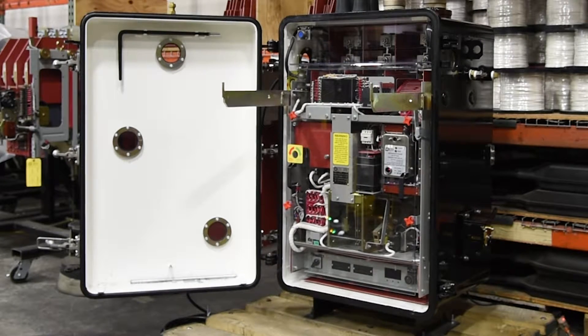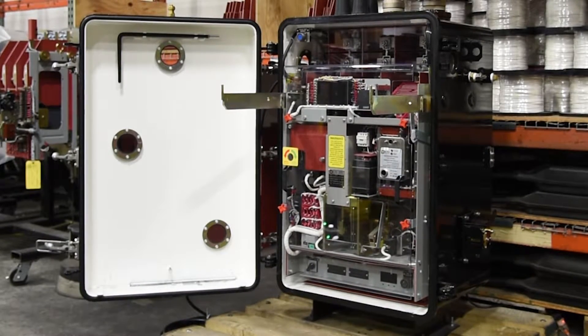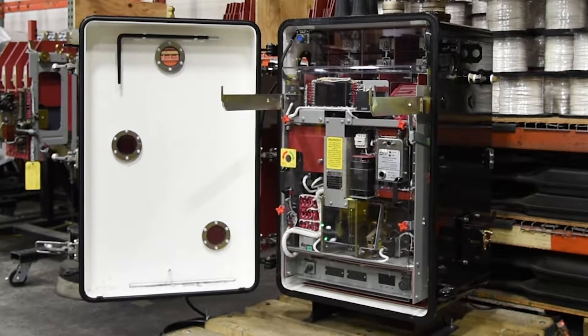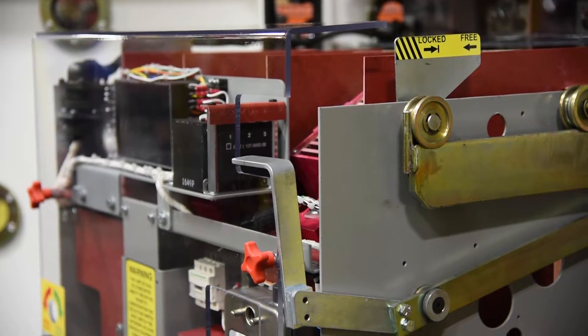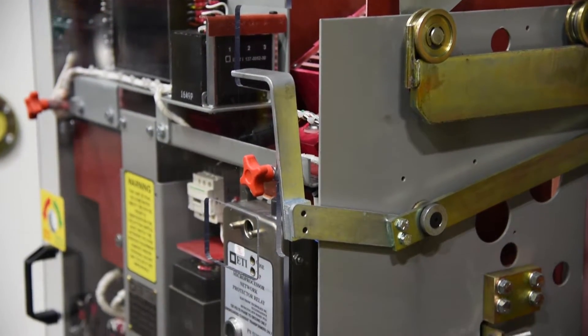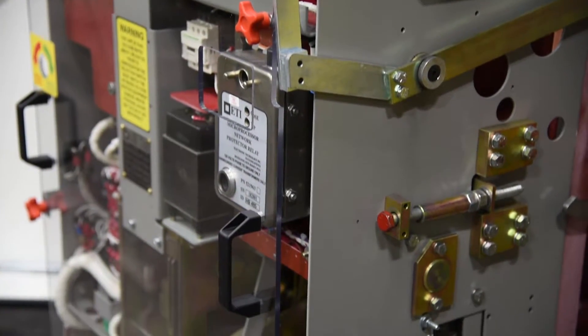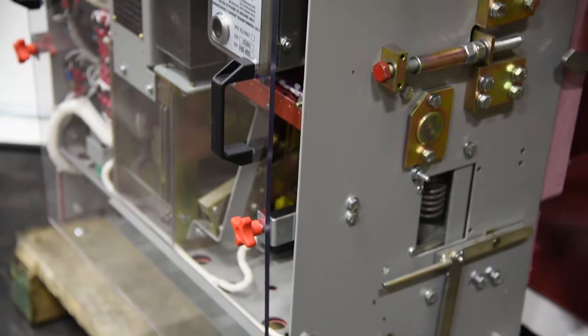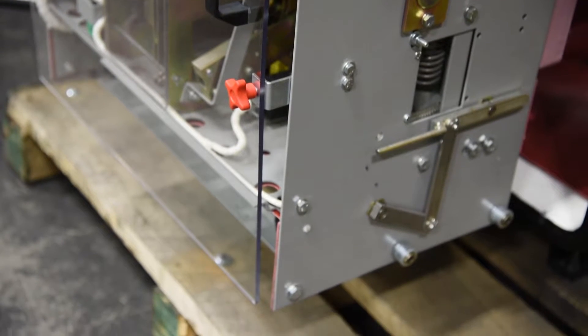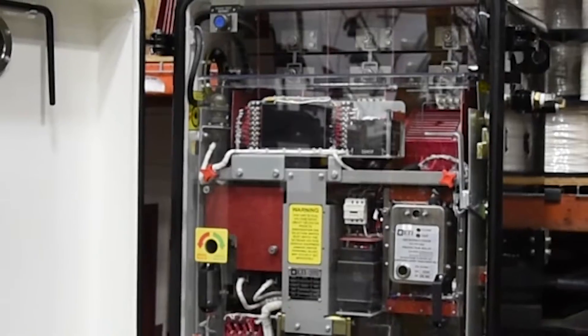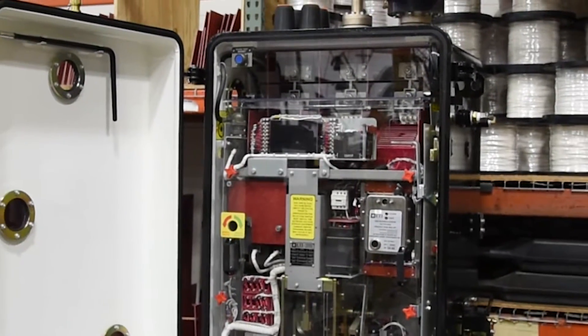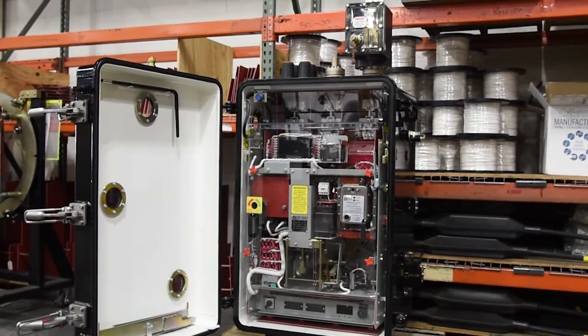The 416NP is the only true heavy duty network protector with a dead front and draw out design. The 416NP evolved from the ultra dependable 316NP. The 316NP has proven itself one of the most rugged durable designs on the market. There are over 10,000 units currently in service and it remains one of our best selling network protectors.